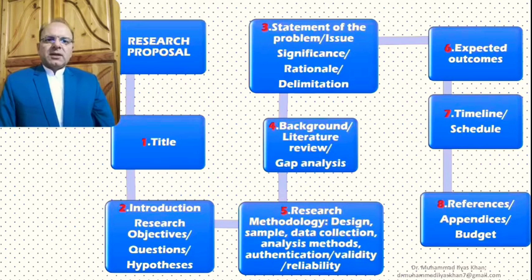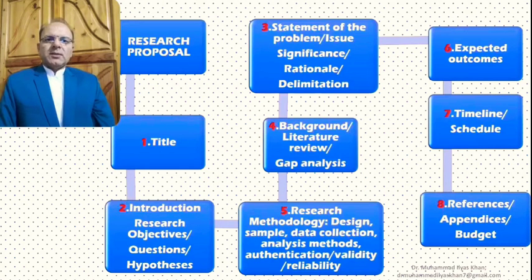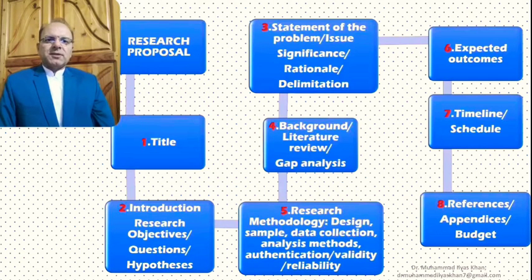Once the aims, objectives, and background of the proposed research study are clear to the readers, the next section addresses the how — how will the proposed study be conducted. This is the research methodology section, which is again an important part of the research proposal. The first important aspect of the research methodology section is the identification and description of the research design being adopted for the study.